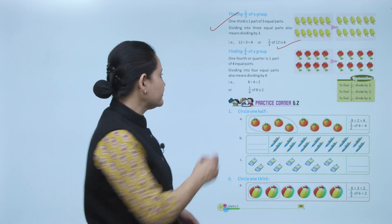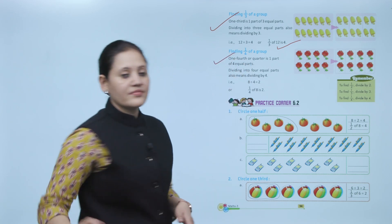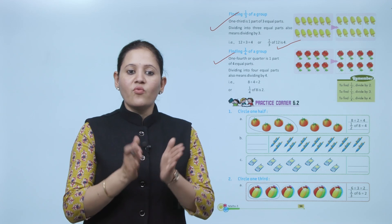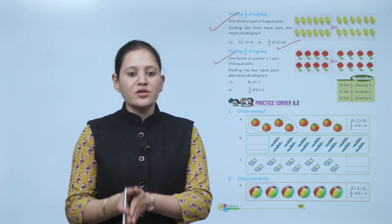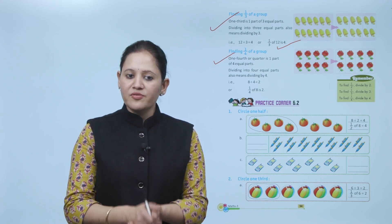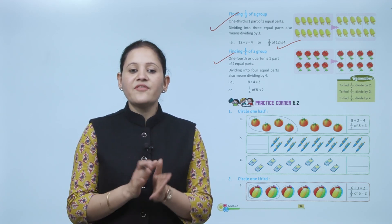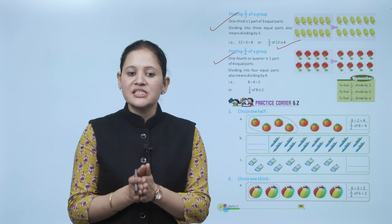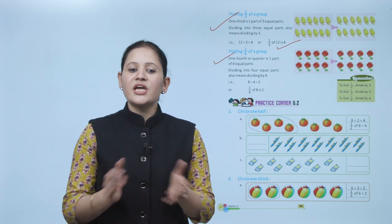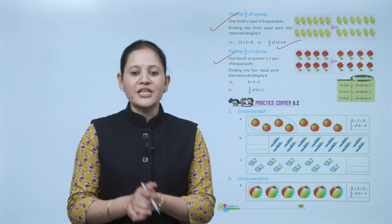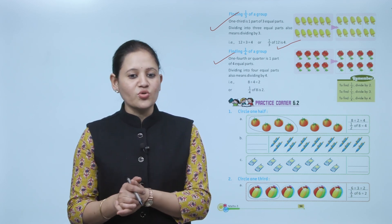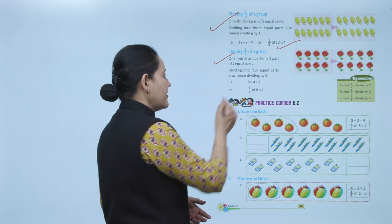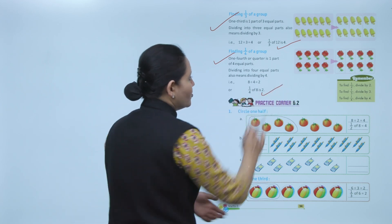Finding one fourth of a group: one fourth is also called a quarter. One fourth, or quarter, is one part of 4 equal parts — dividing into 4 equal parts means dividing by 4. So 8 divided by 4 equals 2. Therefore, 1 by 4 of 8 equals 2.